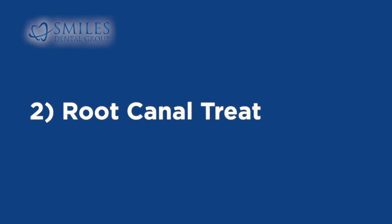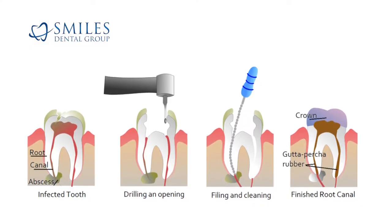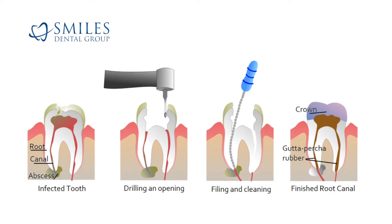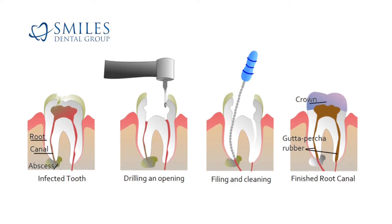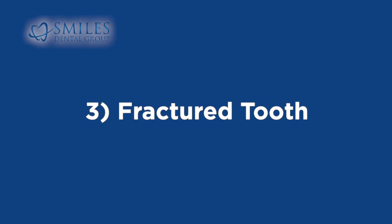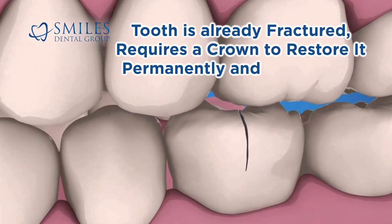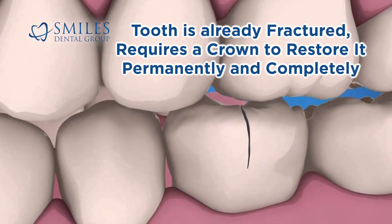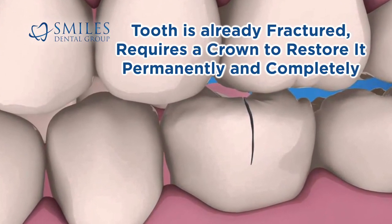Second, root canal treated teeth are at a higher risk of fracture because they can become more brittle over time. Third, a fractured tooth — the tooth is already fractured and requires a crown to restore it permanently and completely.